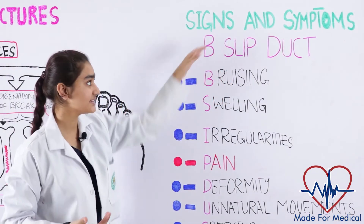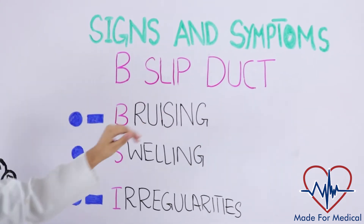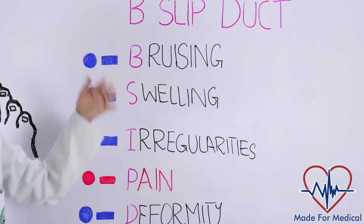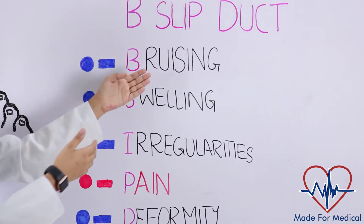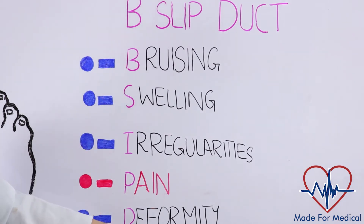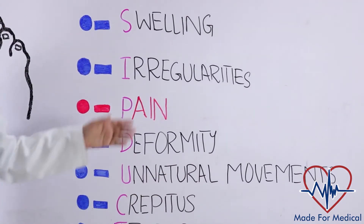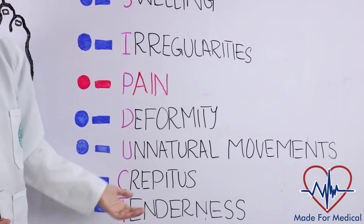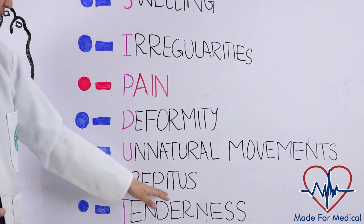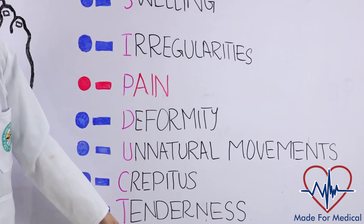Now let's talk about the signs and symptoms of a patient with a fractured bone. To memorize them, remember the phrase 'b-slip-duct': B is for bruising, along with swelling, irregularities, and pain at the site of fracture. D is for deformity, which depends on the type of fracture. U means unnatural movements, because the broken bone can no longer provide support, making movements of that limb limited and painful. C is for crepitus — a crackling sound due to bone fragments rubbing together. And T is for tenderness.